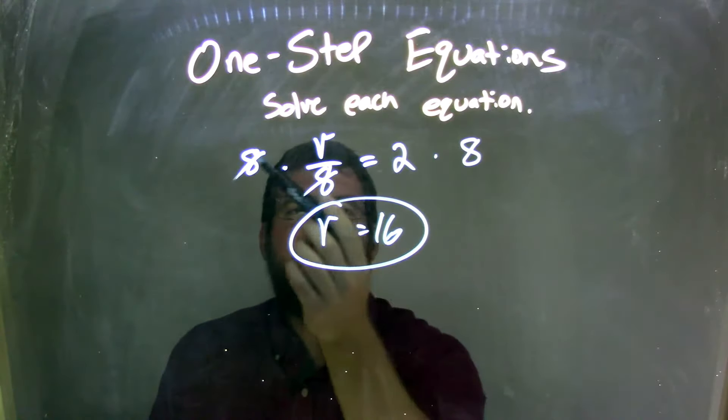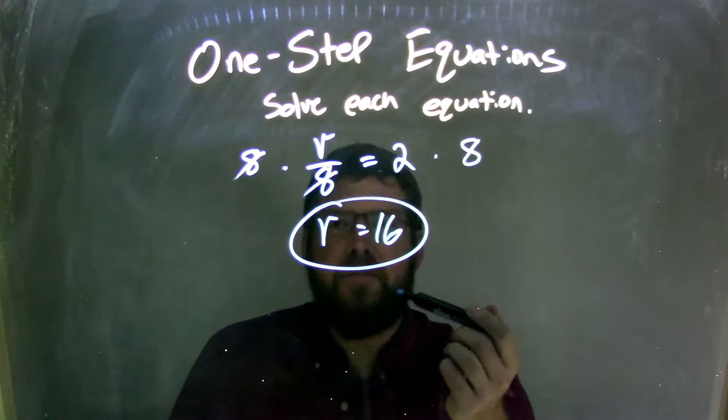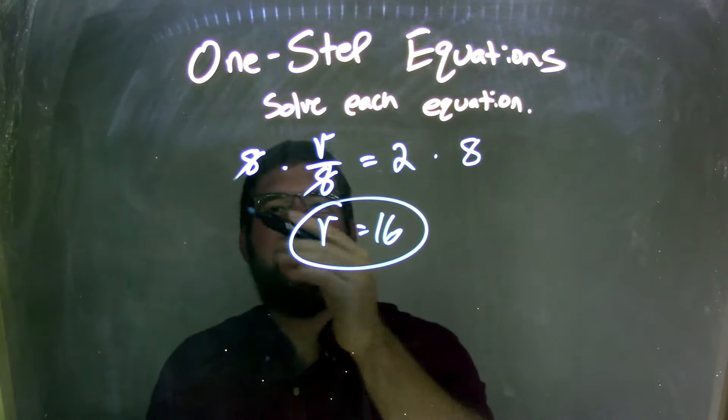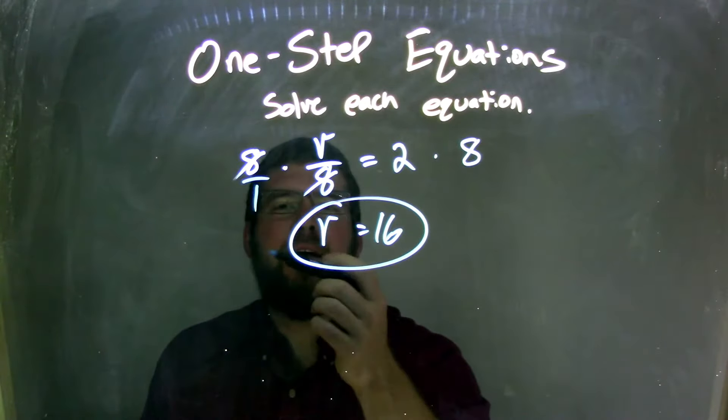So I multiplied both sides by 8. And what that is, is the opposite of division. It's multiplication. So I multiplied both sides by 8. The 8 is canceled here. And really, that 8 is like 8 over 1, if you probably don't want to see it that way. It's a fraction.